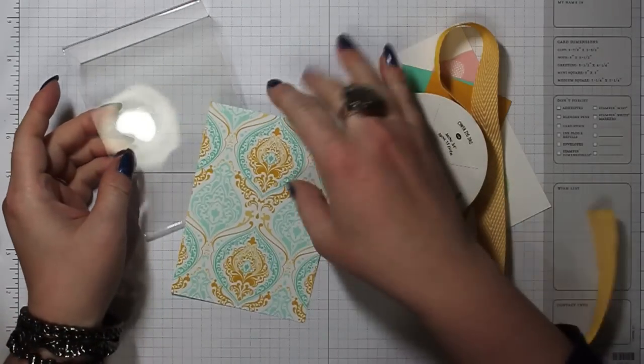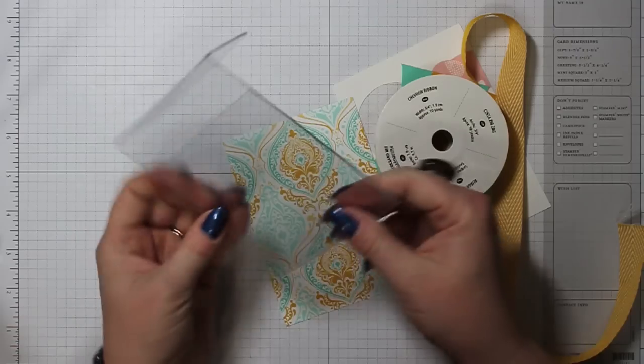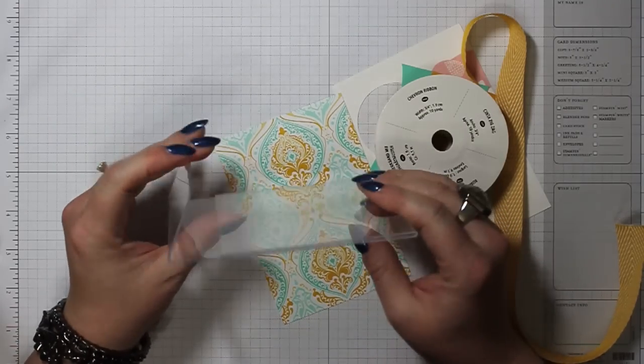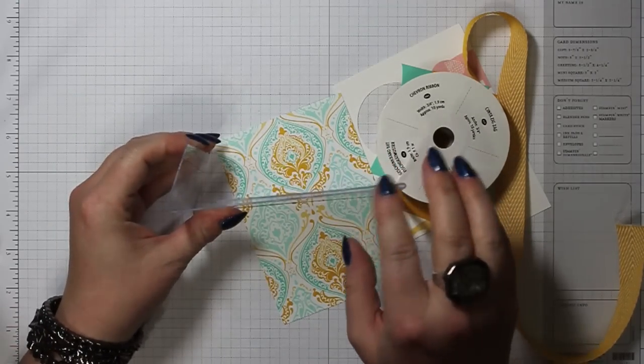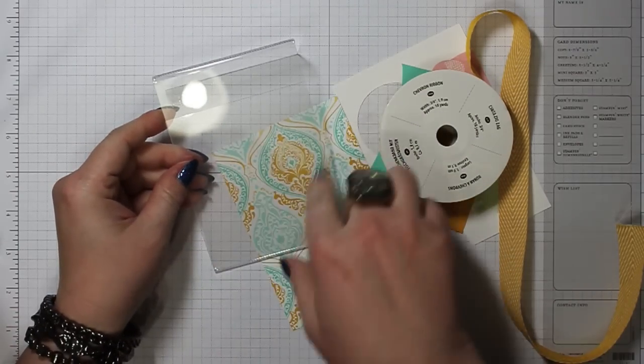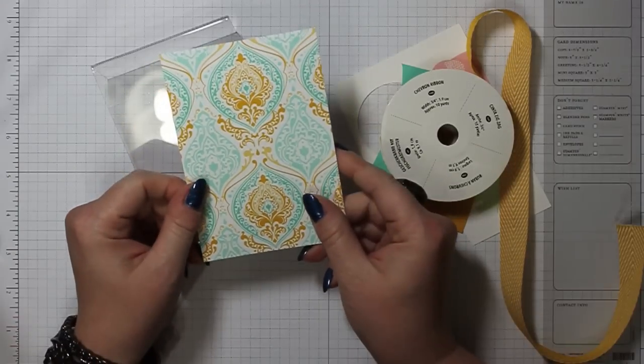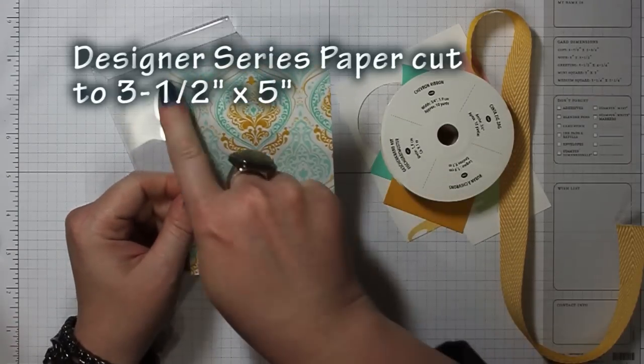The first thing I start with is a three and a half by five inch acrylic photo frame. You can get these at the dollar store usually. You can get a four by six, but there's going to be a lot more space around where your post-it notes are and I just don't like it as well. Then you need a piece of designer series paper cut to three and a half by five.